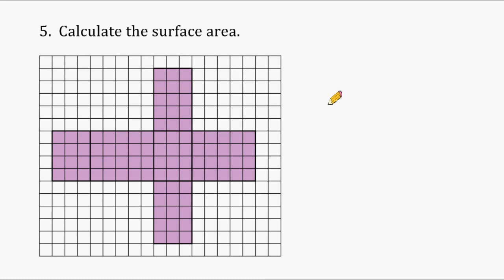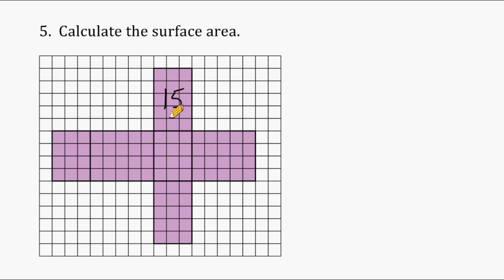For this problem, we have to find the area of this rectangular prism. I'm going to find the area of each one of these rectangles. We have a rectangle here that is 3 by 5, which is 15. And the one that would be on the opposite side when folded would be congruent to that one, so that one is also 15.